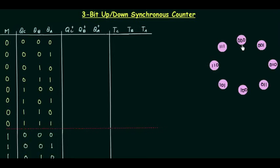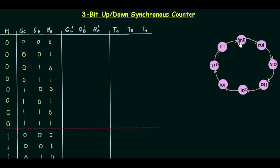For the first 8 cases when M is 0, we have up counting. We start from 0-0-0, go to 0-0-1, then 0-1-0 which is 2, then 3, 4, 5, 6, 7, and back to 0. This is up counting because for every passing clock pulse we have a higher value. QCQBQA changes from 0-0-0 to 0-0-1 — a higher value — and so on for each clock pulse.